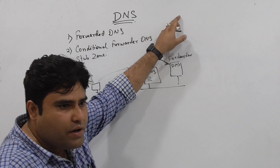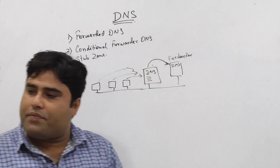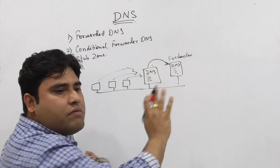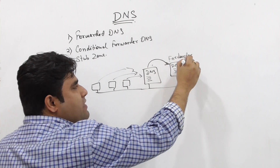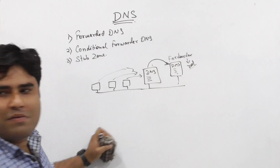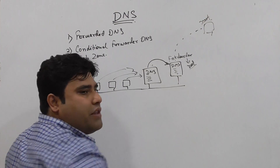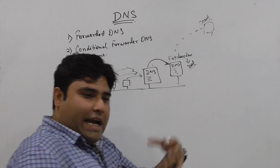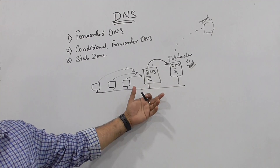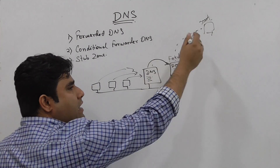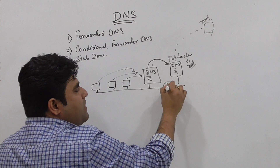Instead of resolving that query from the root server, I will tell my DNS server to forward that query to a forwarder DNS server. This forwarder DNS server will then go and contact the root server to resolve that query. So even if the forwarder DNS server gets compromised, my internal network information will still be safer.